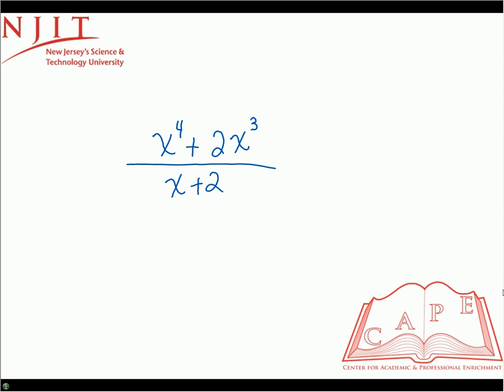You look at the numerator and the first thing that should jump out at you is that you can factor out an x cubed out of each term. So that would be your next step, factor out x cubed.